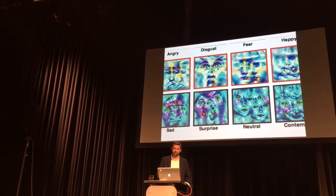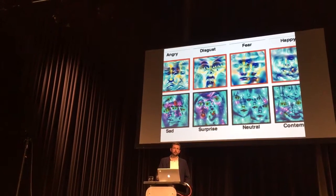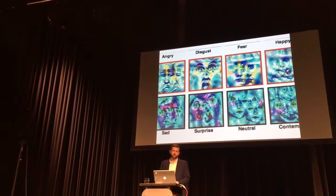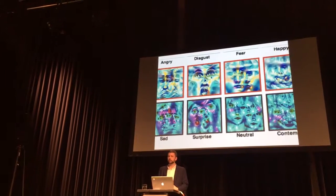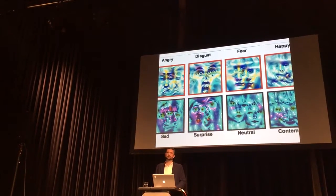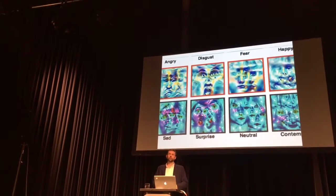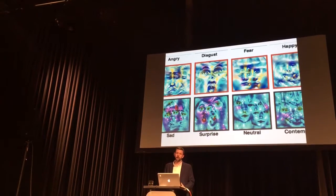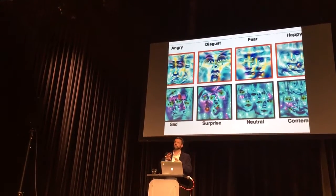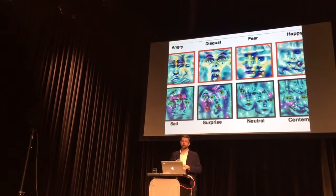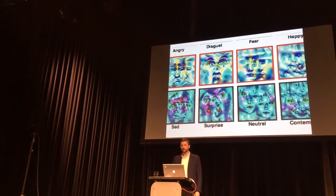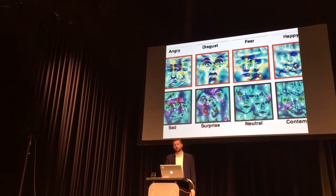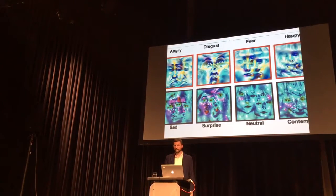There are other ways of looking into the system to see what it is that triggers these responses. This is what's called a synthetic activation of a neural network, and it's showing you what the optimal representation of disgust would be. It doesn't look like one face because it's kind of moving around when it's generating these. But you can see that generally it's very bright, expressed, open eyes for disgust and happy.